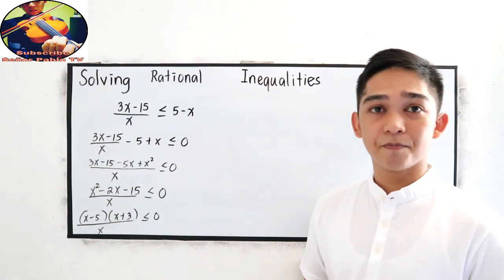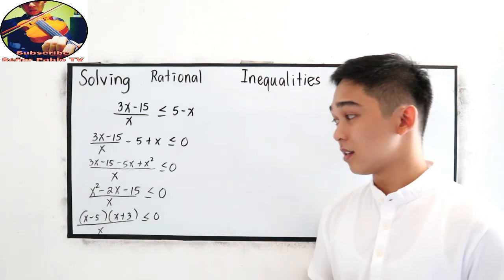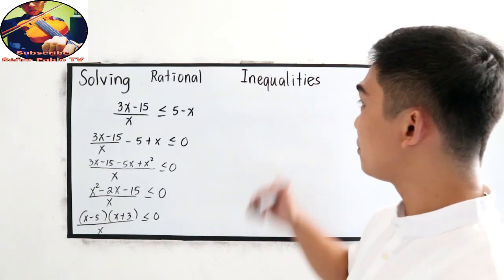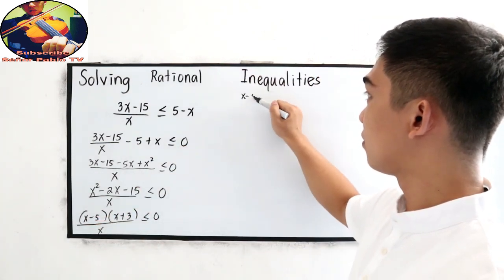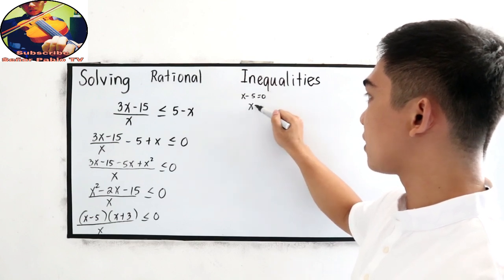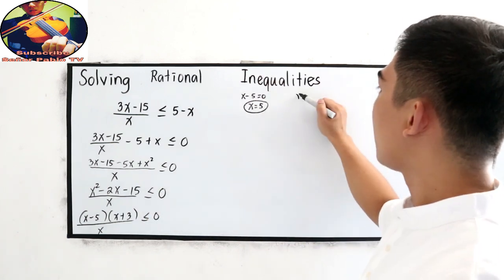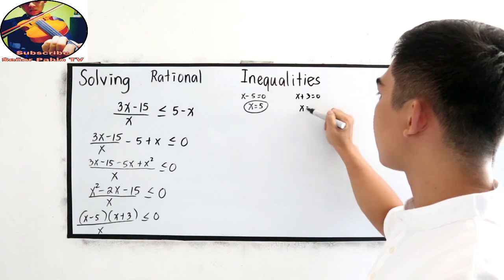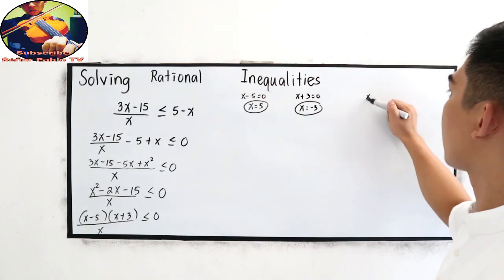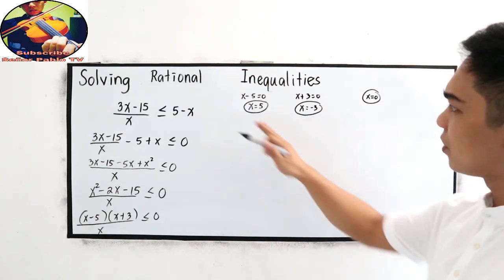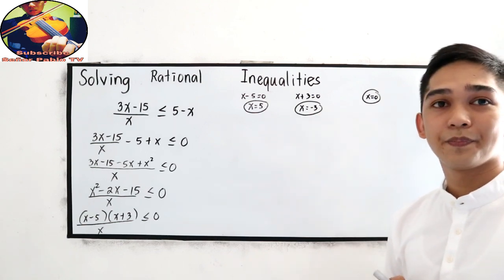For our next step, find the zeros of our inequality by equating each factor to zero. x minus 5 equals zero gives x equals 5. x plus 3 equals zero gives x equals negative 3. And for the denominator, x equals zero. So the critical values are 5, negative 3, and zero.